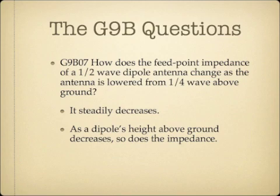How does the feed point impedance of a half-wave dipole antenna change as the antenna is lowered from a quarter wavelength above the ground? It steadily decreases. As a dipole's height above ground decreases, so does its impedance. So if you need to lower the impedance of a dipole antenna, you can bring it a little bit closer to the ground.